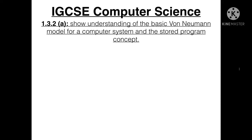Computer Science Syllabus statement 1.3.2a: show understanding of the basic von Neumann model for a computer system and the stored program concept. So this is pretty much learning about the CPU and how it works.